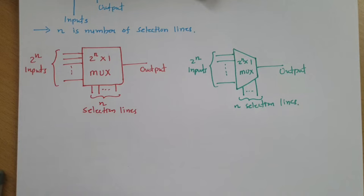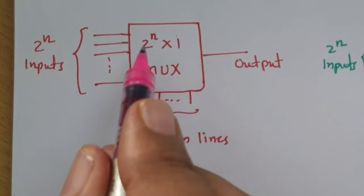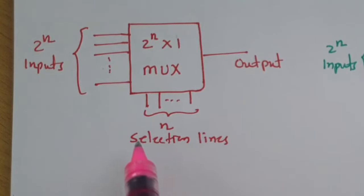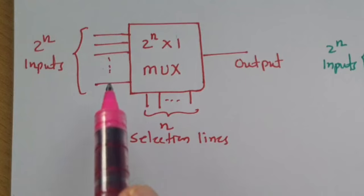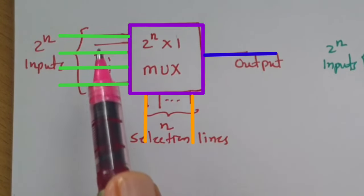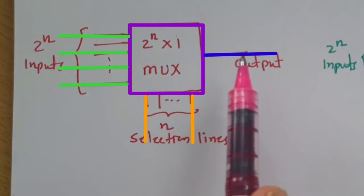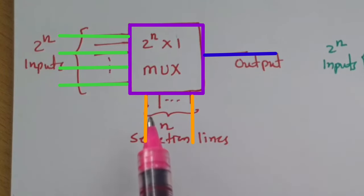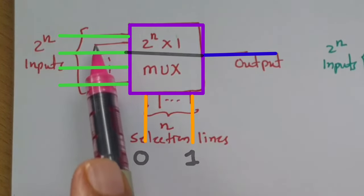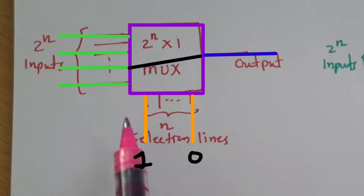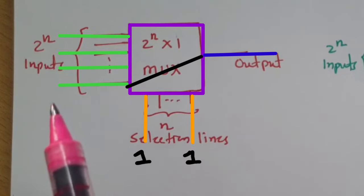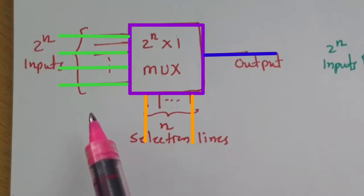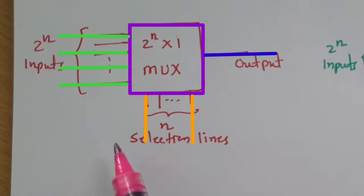To understand how the multiplexer functions: the multiplexer works based on transfer of input to output, and that transfer happens based on the selection line. For example, if we have 2 selection lines there will be 4 inputs. If the selection input is 00 then the first line is selected; 01 selects the second line; 10 selects the third line; and 11 transfers the fourth line to output.